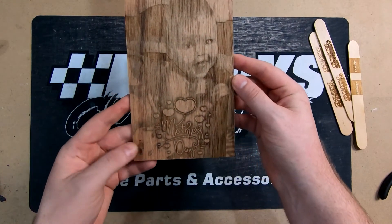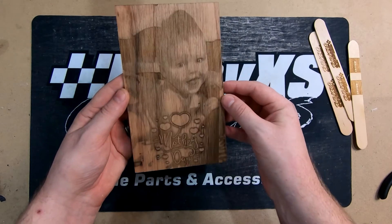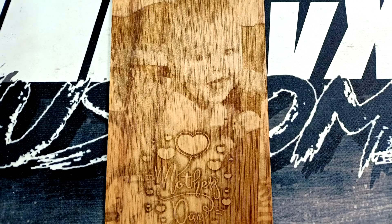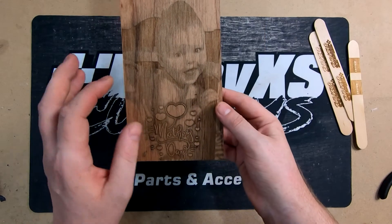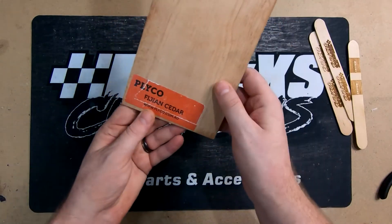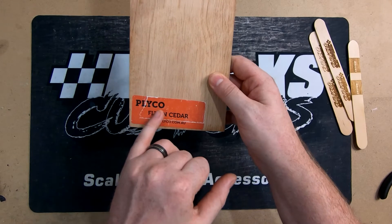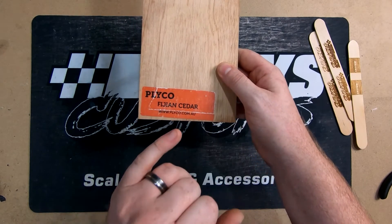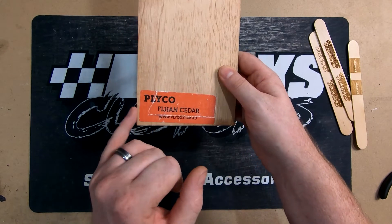And then we finally felt a little bit more confident to do something a little bit bigger in size. So we did this for the wife for Mother's Day. This took about 13 hours I believe. This is done on a Fijian cedar. We got these samples from Plyco here in Australia.